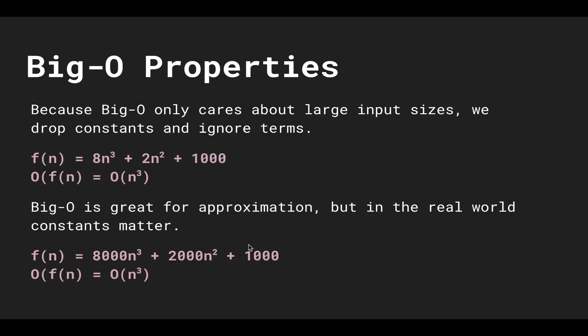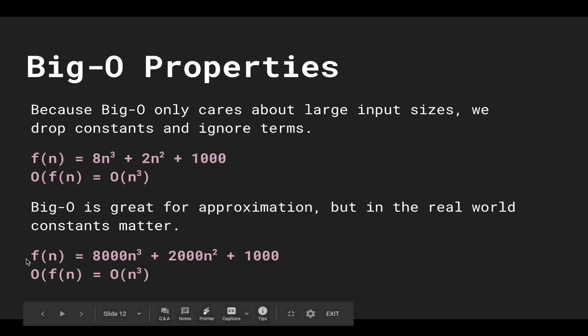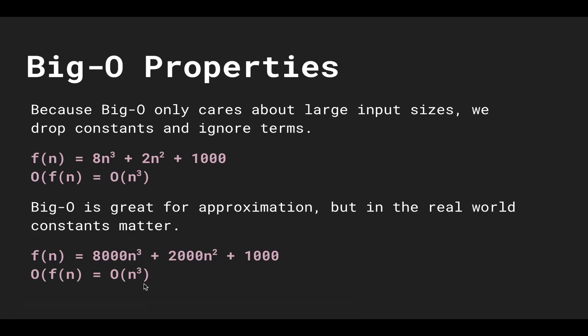Big O is great for approximation, but in real life constants really do matter. If our runtime were 8000n³ + 2000n² + 1000, dropping constants and ignoring smaller terms means n³ won't be the best approximation. We still want to minimize constants as much as we can, but Big O gives us a good general overall analysis.